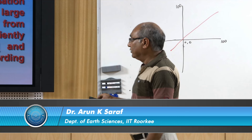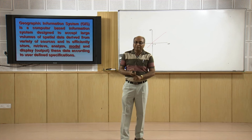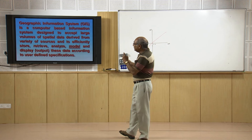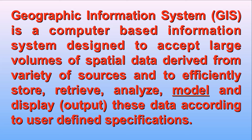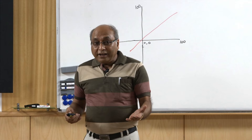Let us look at the definition of GIS. This is the most modern definition; in different books, literature, or on the internet you may find slightly varied definitions. Here each and every word is very important. GIS is a computer-based information system — that means, can we have an analog GIS system? No, it is very difficult.